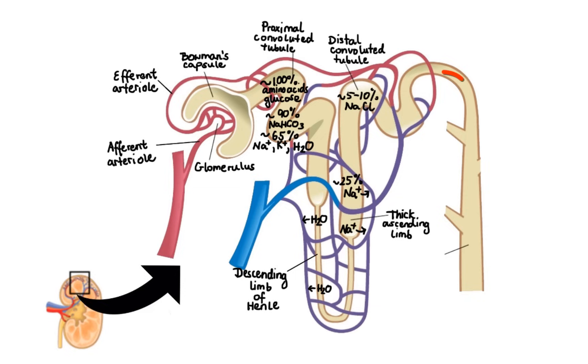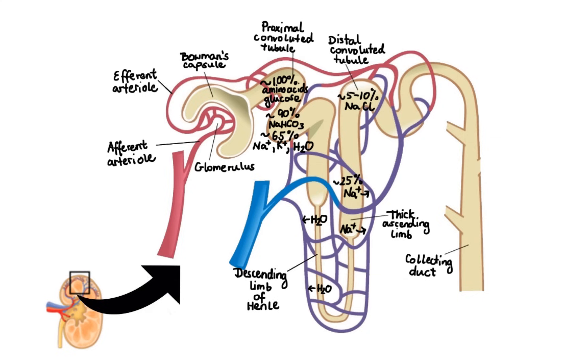Finally, the filtrate travels through the late distal tubule and collecting duct. Here we find two types of cells, the principal cells and the intercalated cells. The functions of the principal cells are regulated by two hormones: aldosterone, which increases sodium reabsorption and increases potassium secretion, and antidiuretic hormone, which increases water permeability and thus increases water reabsorption. On the other hand, the intercalated cells are regulated by aldosterone, but their primary function is to secrete hydrogen ions and reabsorb potassium.